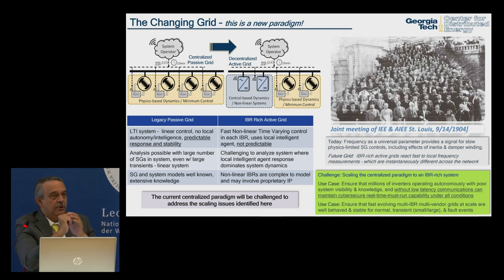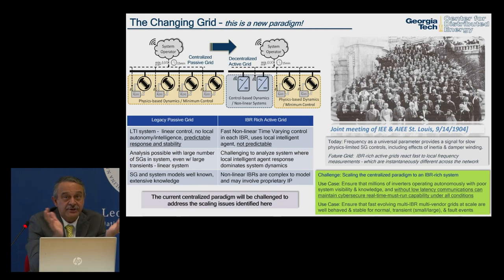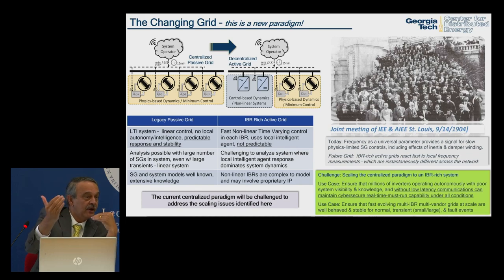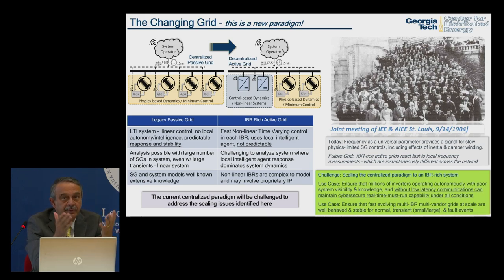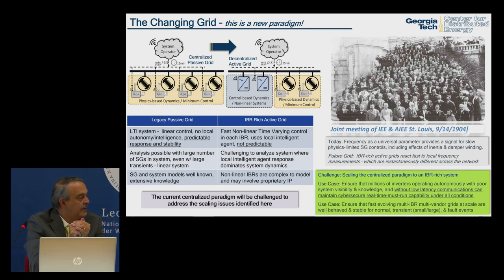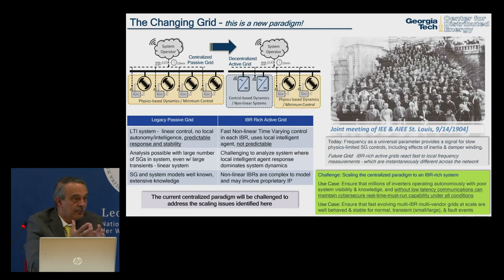The same thing happened on the main grid in the early 1900s — it was the wild west. A 1904 meeting organized by the IEE brought engineers together, and standardization of frequency, voltages, and protection all started there. Today the challenge is scaling the centralized paradigm to an IBR-rich system with millions of inverters operating autonomously, with poor system visibility, low-latency communications, and cyber-secure real-time must-run capability under all conditions.